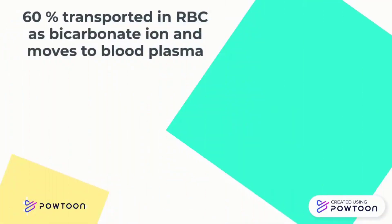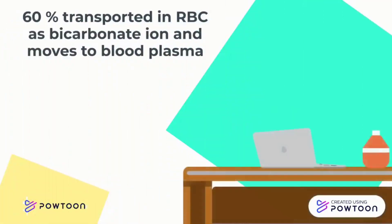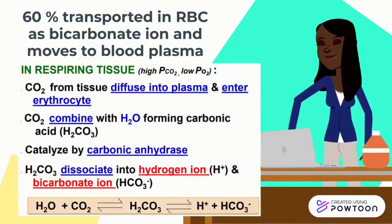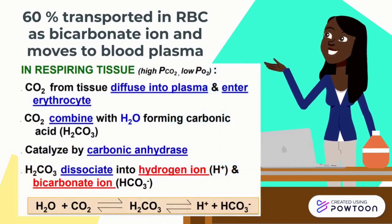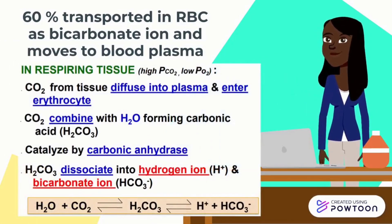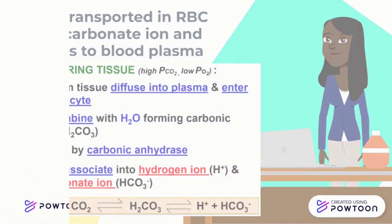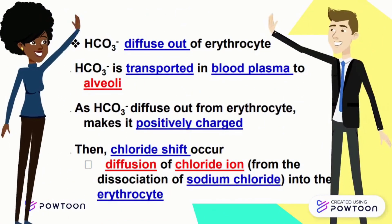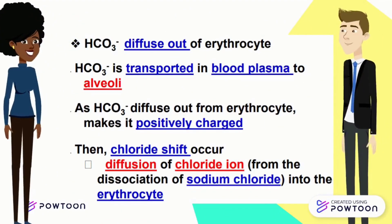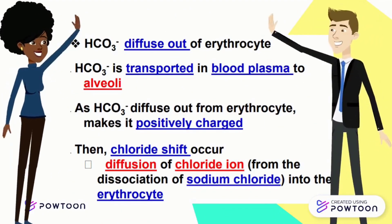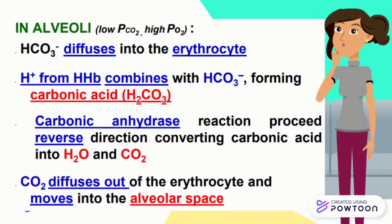Next, I'm going to present about 60% of carbon dioxide transported in RBC as bicarbonate ion and moved to blood plasma. I will explain in more detail about the transportation of 60% carbon dioxide in respiring tissue and also in alveoli.